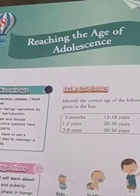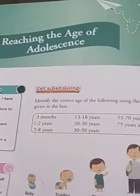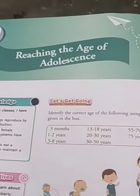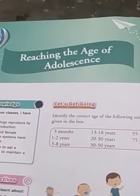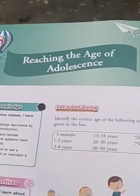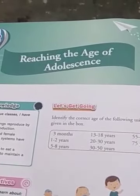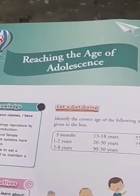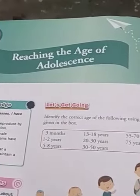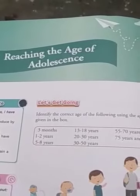Hello Class 8 students. This is Chapter 8: Reaching the Age of Adolescence. In this chapter we are going to read about the age of adolescence, which is roughly between 11 to 19 years — what we call the teenage years, or teenagers.